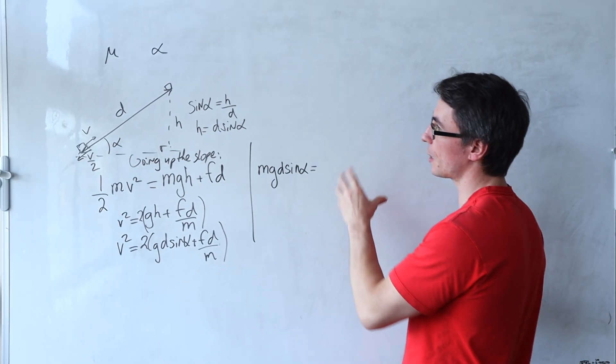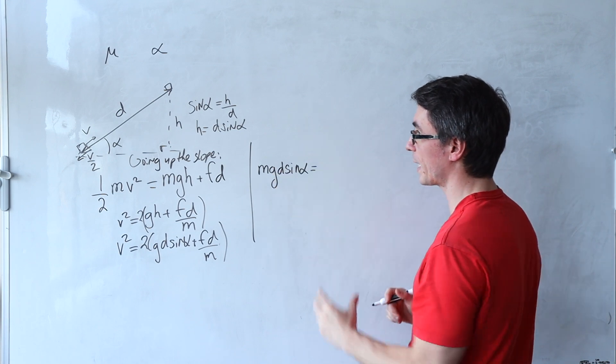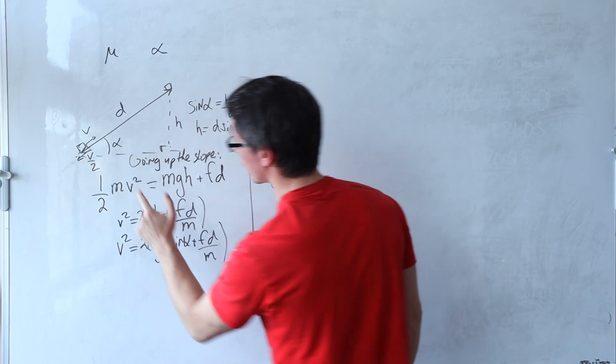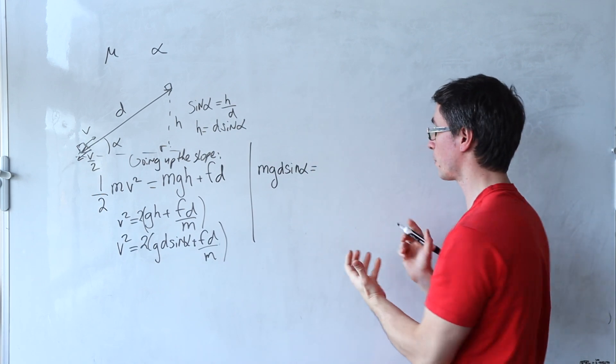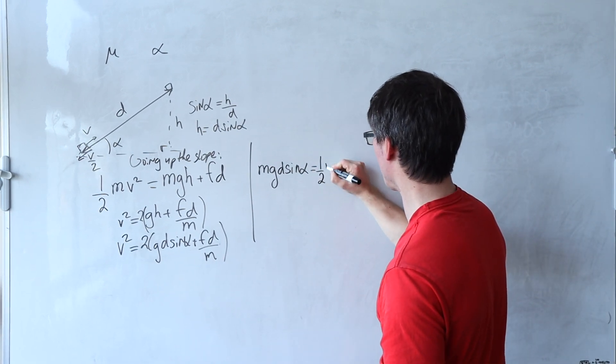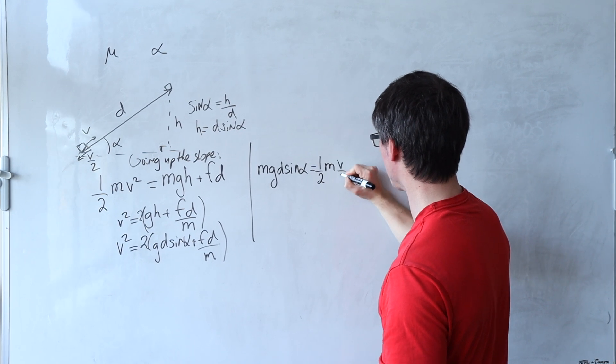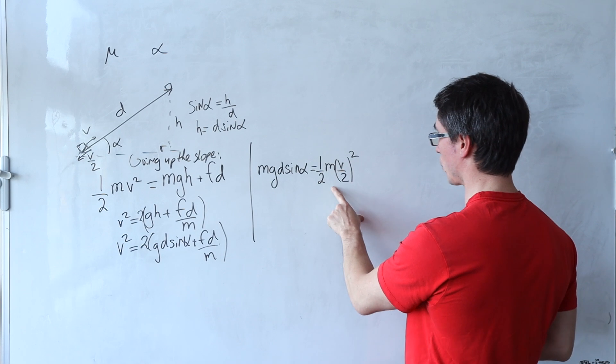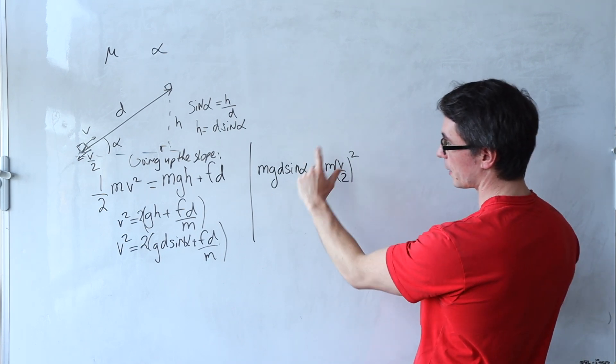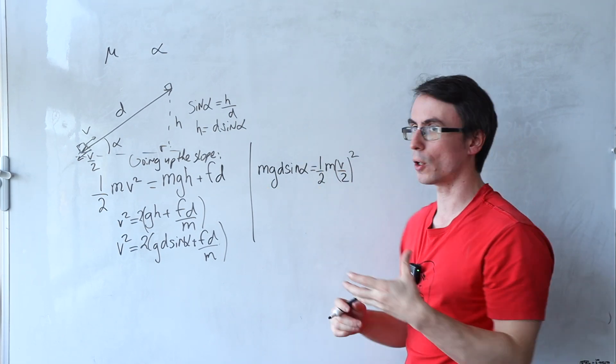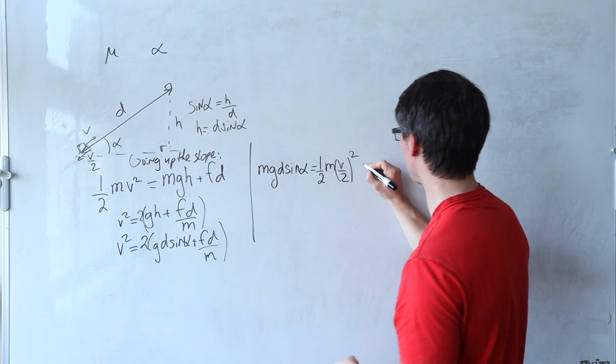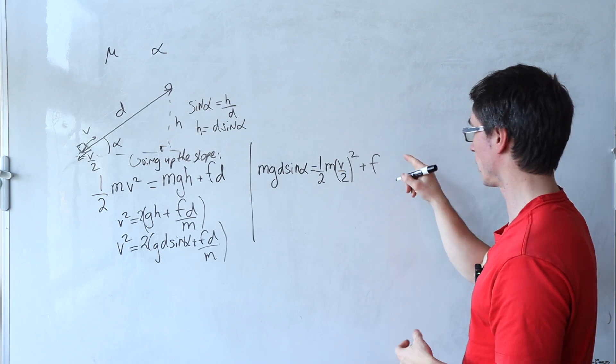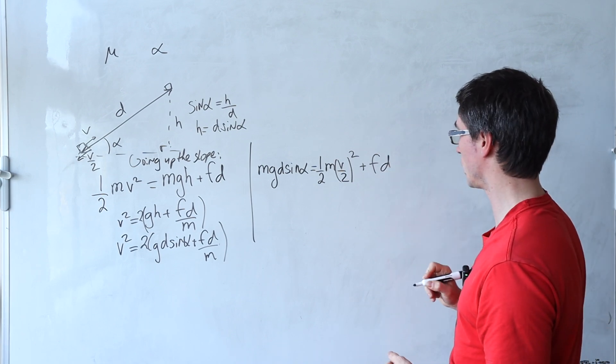Some of this energy is going to go to kinetic energy but the speed at the bottom of the slope is now half of the initial speed. So this here will be equal to a half m v over 2, let's just be careful with the brackets here, squared. Additionally, some of that initial energy would have also gone yet again to frictional forces. So this will be equal to the frictional force multiplied by the distance which is d.